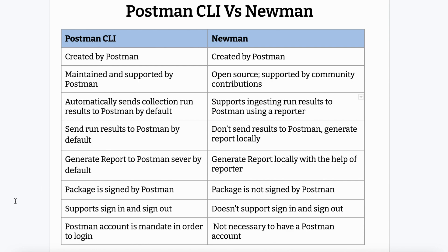Postman CLI generates reports to the Postman server by default. When you execute your collection, all test results — how many passed, how many failed — are visible in the Postman server automatically. In the case of Newman, it generates the report locally with the help of a reporter, such as the HTML report or HTML Extra reporter.